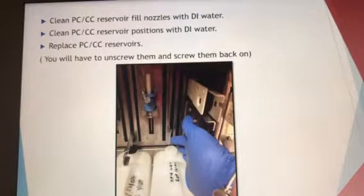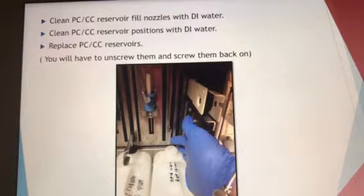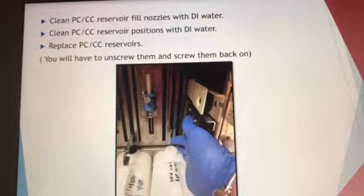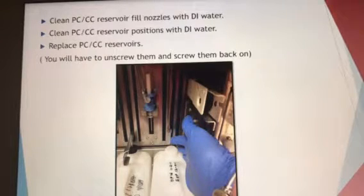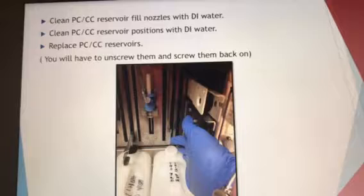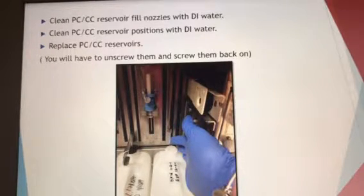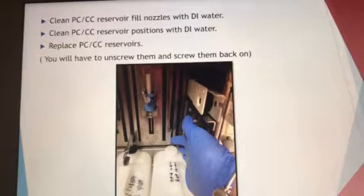Next, clean your pro cell and clean cell reservoir fill nozzles with DI water. As shown, there's a little clear plastic tip on each one — unscrew it and pull it off. Rinse them at the DI water sink and screw each one back on. There are four of them, so do one at a time so none get mixed up. It takes a little time, but that's okay.